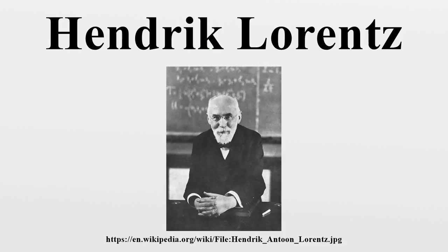In 1905, Einstein would use many of the concepts, mathematical tools and results Lawrence discussed to write his paper entitled On the Electrodynamics of Moving Bodies, known today as the theory of special relativity. Because Lawrence laid the fundamentals for the work by Einstein, this theory was originally called the Lawrence-Einstein theory. In 1906, Lawrence's electron theory received a full-fledged treatment in his lectures at Columbia University, published under the title The Theory of Electrons.